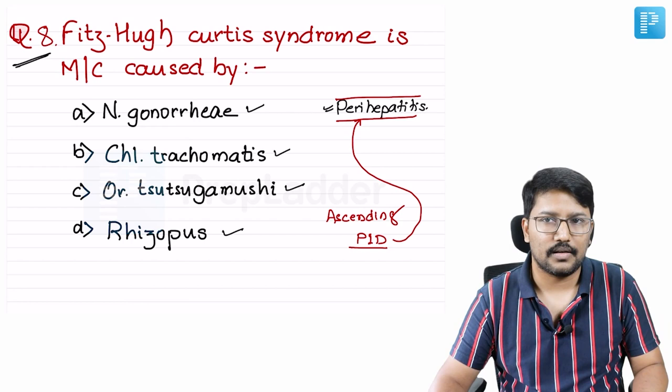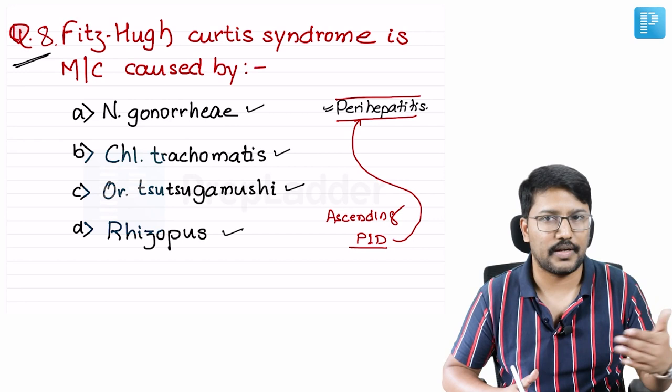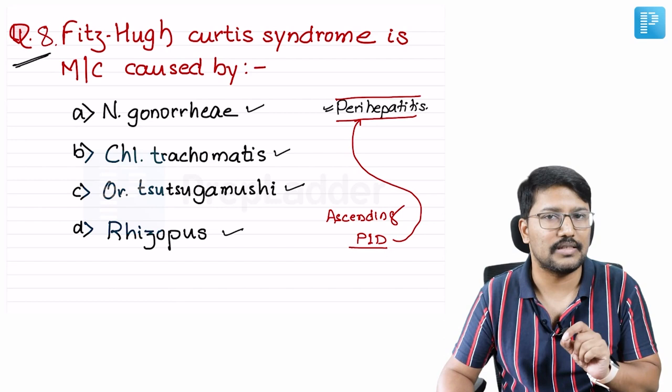This PID and perihepatitis in Fitzhugh-Curtis syndrome are often associated with exudative secretions. Because of these exudative secretions, inside the pelvis there will be adhesions that can cause various manifestations including infertility in a female. At the level of the liver, perihepatitis can cause adhesions to surrounding structures, sometimes involving the intestine, presenting with intestinal obstruction.